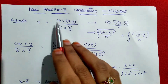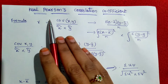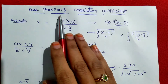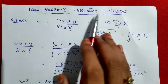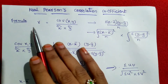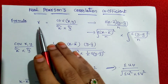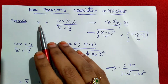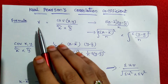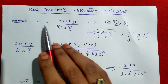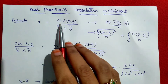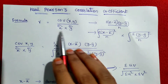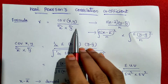Hi everyone. Today in this video we will see an example problem on Karl Pearson's correlation coefficient. So what is the formula? Here, correlation is denoted by small r. Correlation equal to covariance of xy divided by sigma x into sigma y.